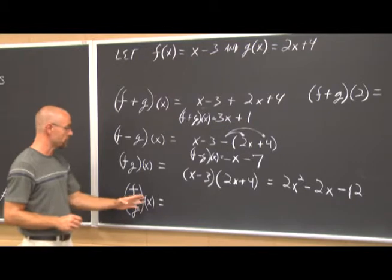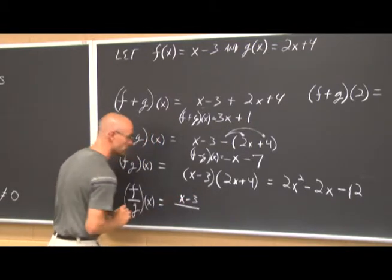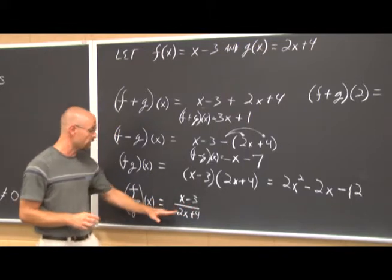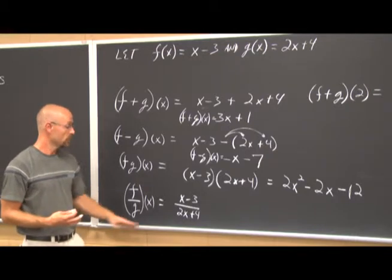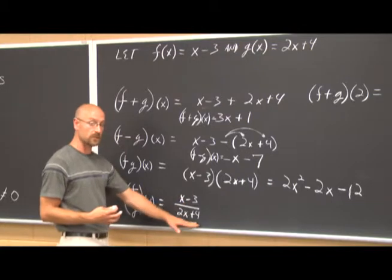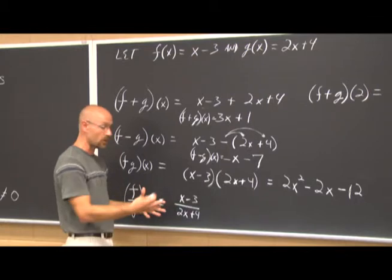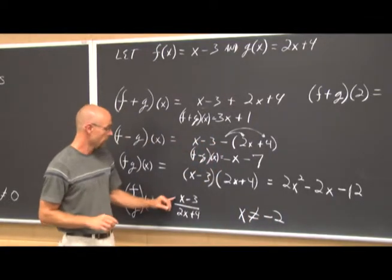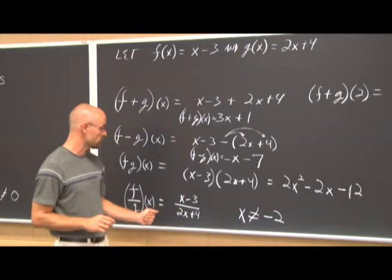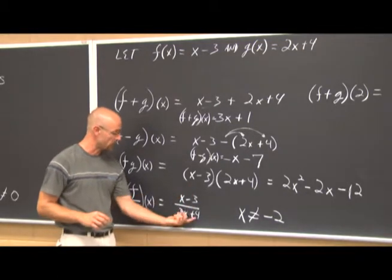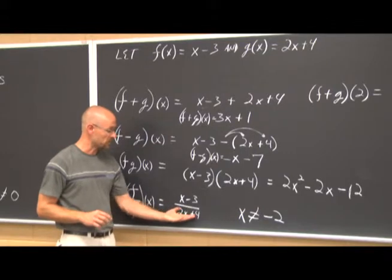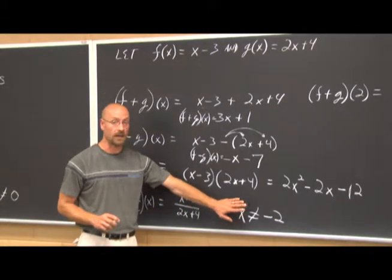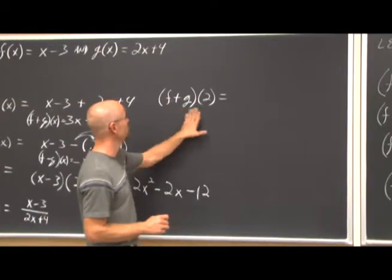For f divided by g of x, we have (x minus 3) over (2x plus 4). Now there's an x in the denominator, so we have a domain restriction. We set 2x plus 4 equal to zero and solve: x equals negative 2. So x cannot equal negative 2, because we can never divide by zero. We try to simplify, but nothing cancels, so the function is already simplified. We state the domain: x cannot equal negative 2.